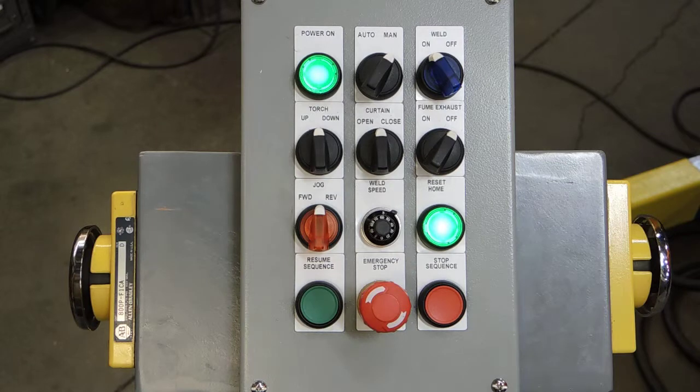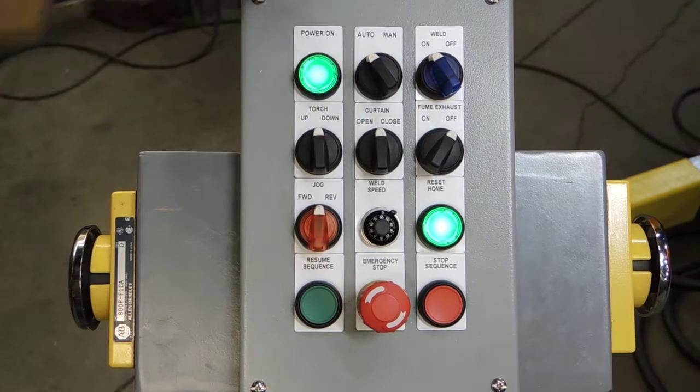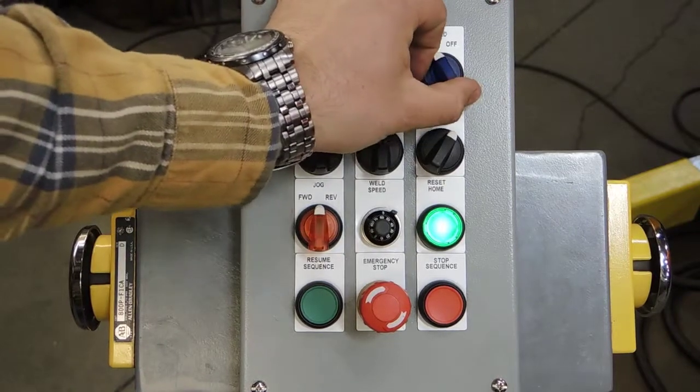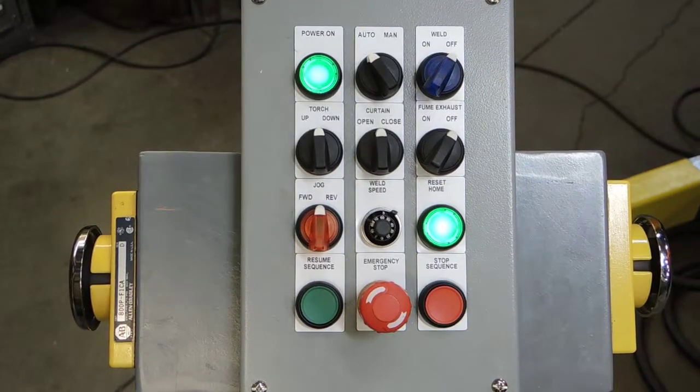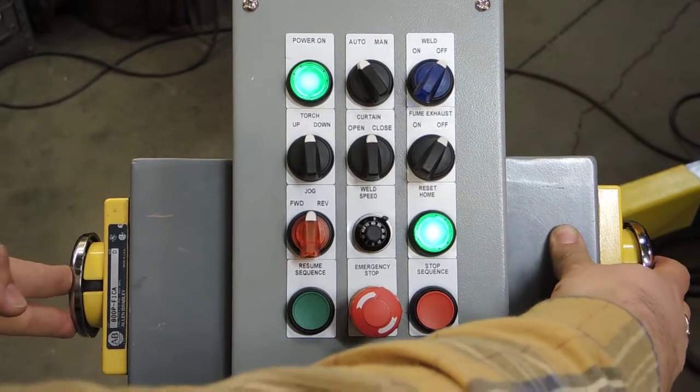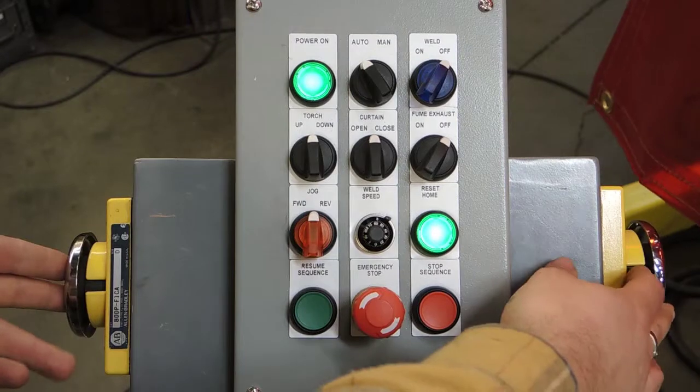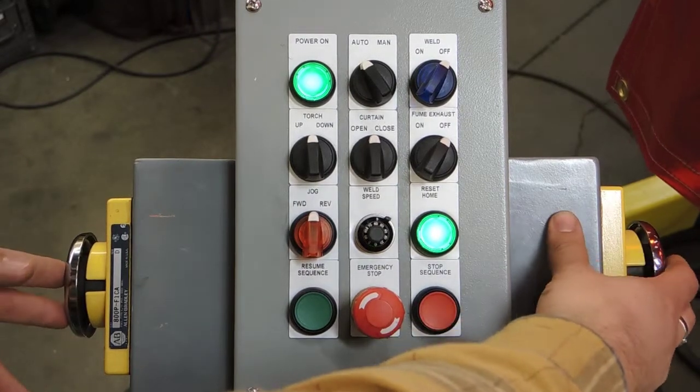In the manual mode or in the automatic mode, if we turn our welder off and we run a sequence, we'll hit both palm buttons, which are required, and we have to hold the palm buttons in long enough for the weld curtain to close completely.